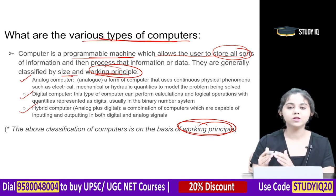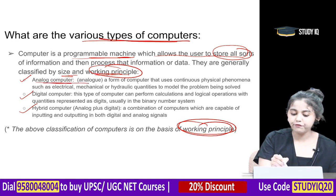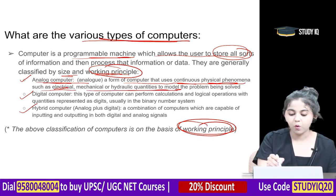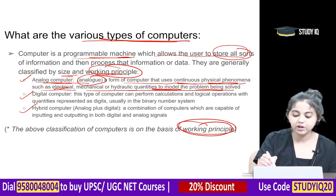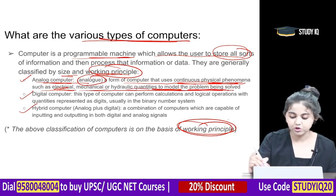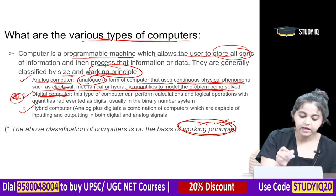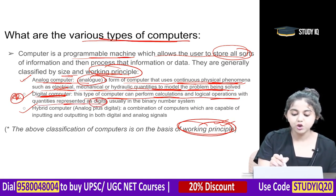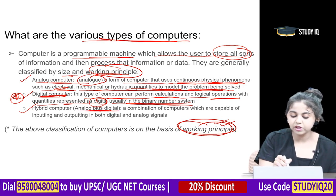An analog computer uses continuous physical phenomena such as electrical, mechanical, or hydraulic quantities to model the problem being solved. A digital computer can perform calculations and logical operations with quantities represented as digits, usually in the binary number system, which is the computing language.